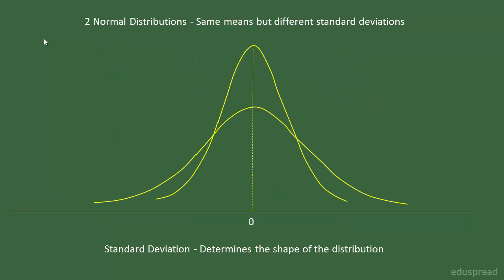Let's take a situation where we have two normal distributions with same means but different standard deviations. I have drawn two normal distributions here, and let's say one distribution has a standard deviation of 5 and the other has a standard deviation of 10. It's time for a pop quiz — which distribution has a standard deviation of 5 and which has a standard deviation of 10? If you think this distribution has a standard deviation of 10 and this one has a standard deviation of 5, you are absolutely right. A larger standard deviation means more variability in the data, and this variability results in wider and flatter curves.